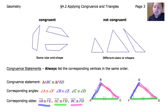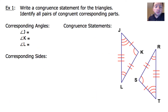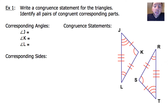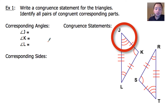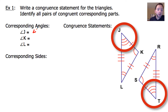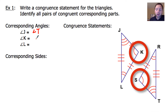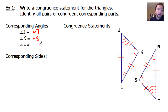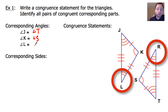Let's take a look at our first example. I want you to write it down on your note sheet. We've got a congruent statement for the triangle, and we've got to identify all pairs of congruent corresponding parts — the congruent angles. Start off with angle J, then K, then L, and write down the corresponding angles those three would be congruent to. Angle J has got three hash marks, so over in the other triangle the one with three hash marks is angle T. Angle K has one hash mark, so that one is angle S. And angle L has two angle marks, so that is going to be angle R.